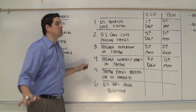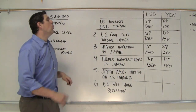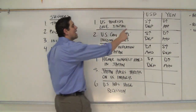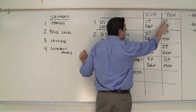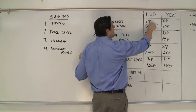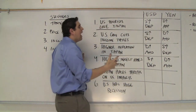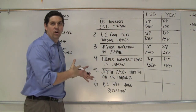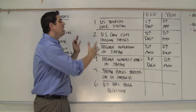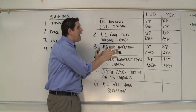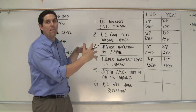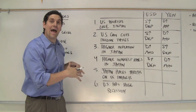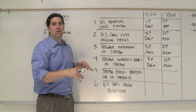Now up to this point, I want you to notice: whenever demand goes up for one currency, the other country has to increase supply of their currency. And so side-by-side graphs showing you the two currencies — demand and supply — always go up or down together.